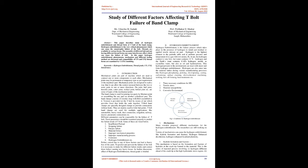Mechanical joints are part of a machine which are used to connect one or more components to each other. Mechanical joints may be permanent or temporary type as per requirement of the machine or part. They are designed to allow or restrict movement between two or more parts in one or more directions. Pin joint, ball joint, knuckle joint, cotter joint, welded joint, bolted joint, etc., are some types of mechanical joints. The band clamp is used for joining two parts by marmon joint or assembling any part on another cylindrical part.